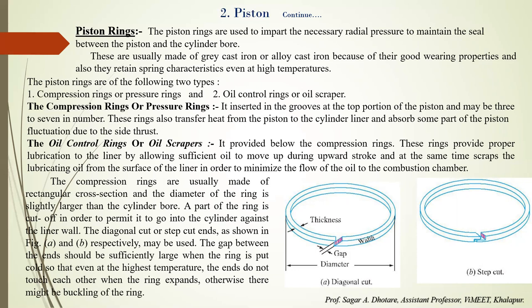Compression rings are placed in grooves provided on the piston barrel. Their function is to seal the space between the piston and the cylinder, prevent leakage of gases, transfer heat from the piston to the cylinder wall, and absorb part of the piston impact due to side thrust of the connecting rod. The number of compression rings in automobile and aircraft engines is usually three, sometimes four. In stationary IC engines, five to seven rings are used — it is advisable to use more narrow rings than fewer wide ones, as more narrow rings result in better sealing action.